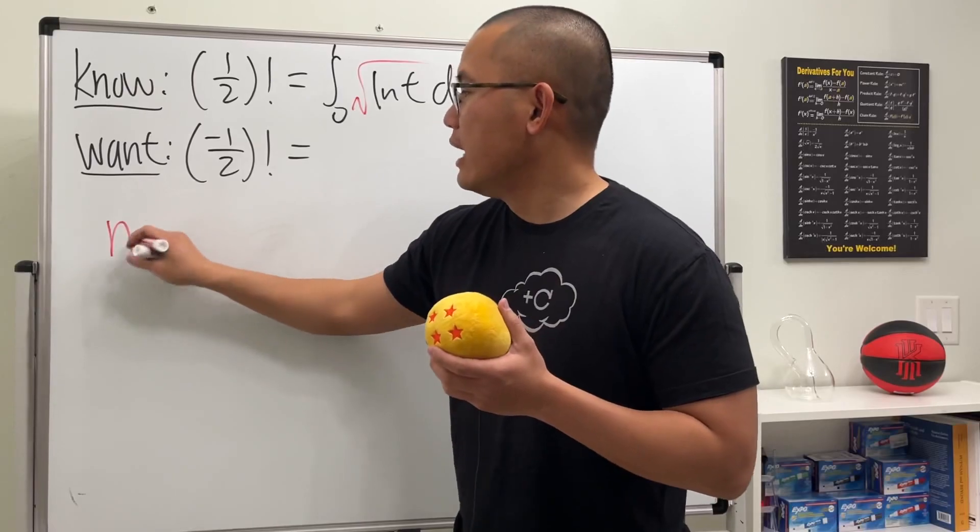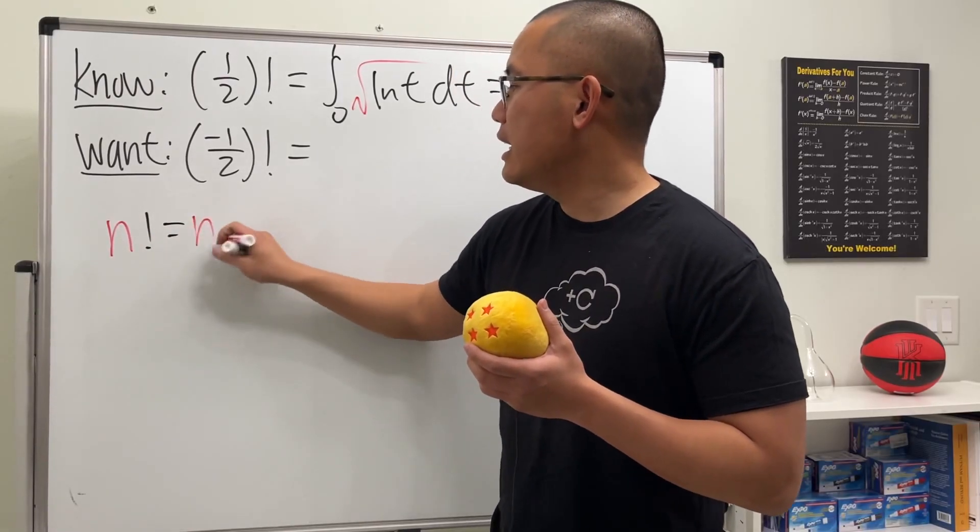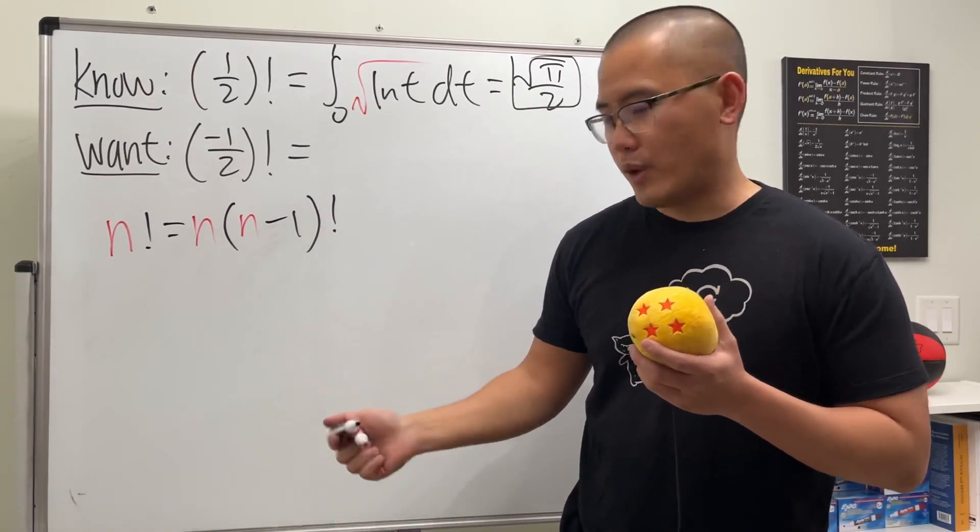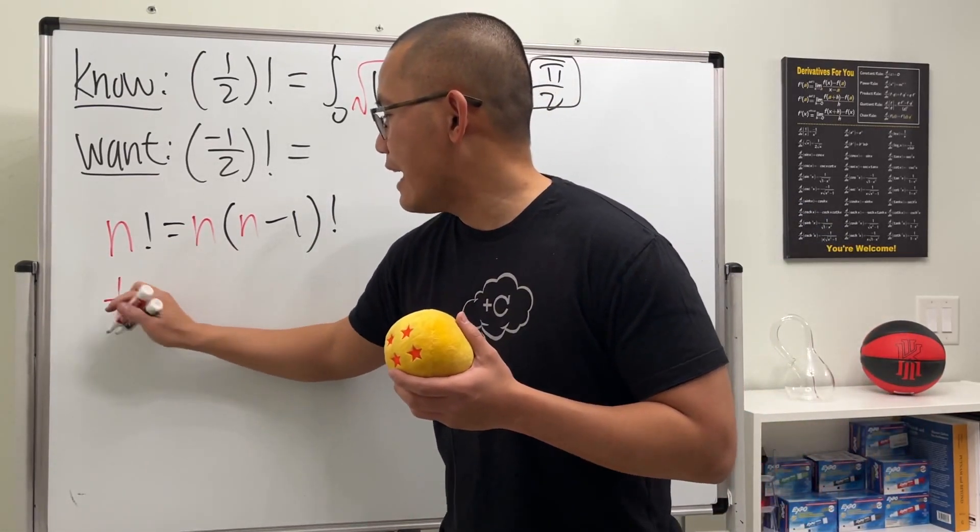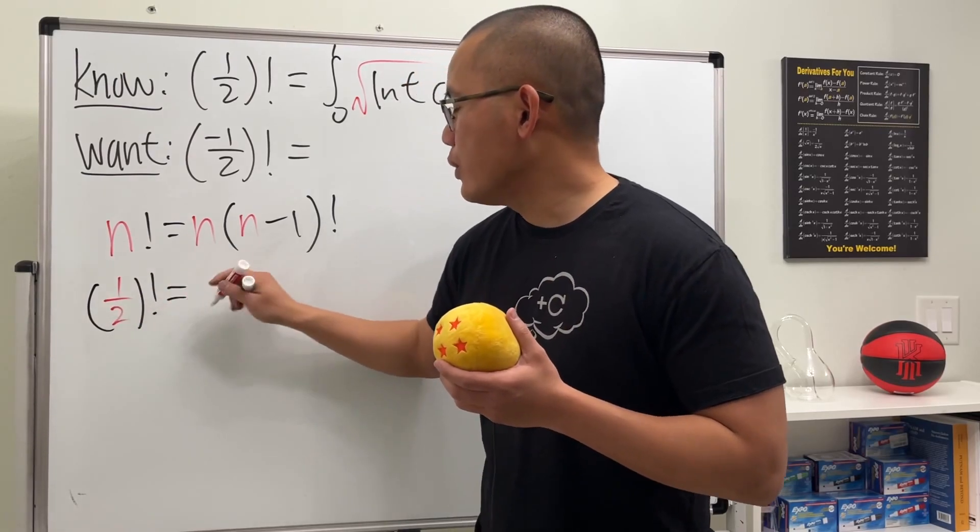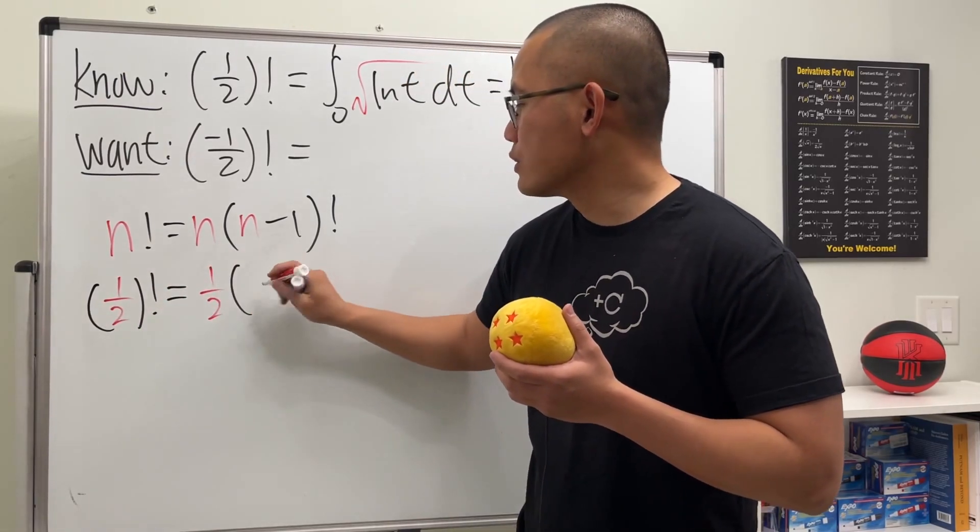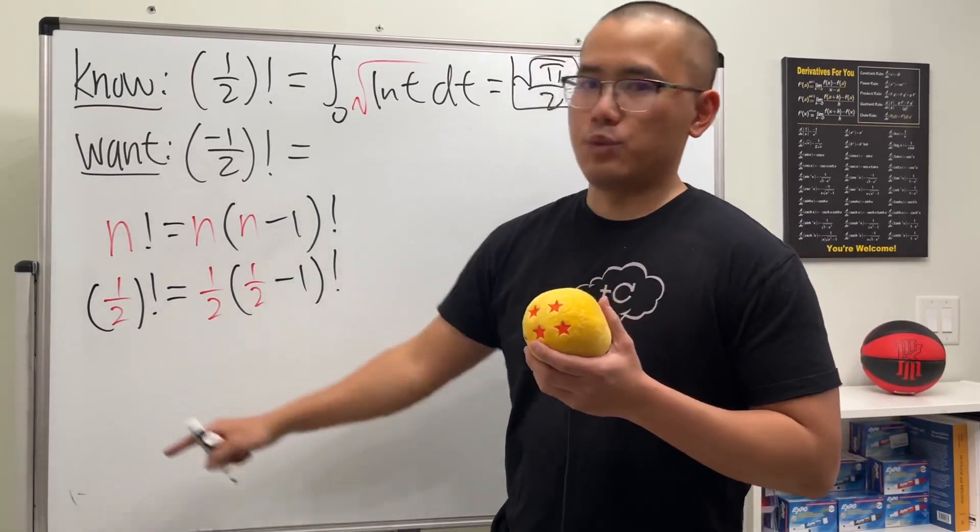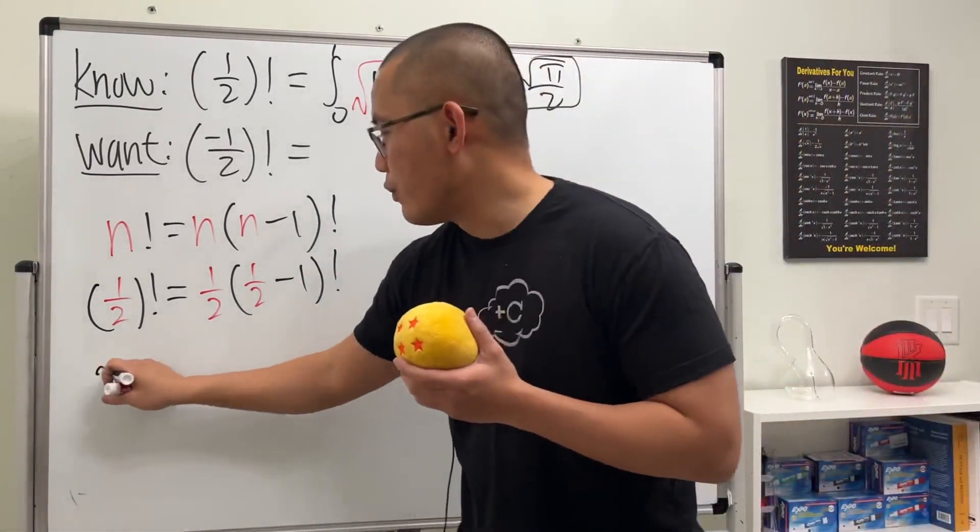Because we know that n factorial is the same as n times n minus 1 factorial, and we can just plug in n is equal to 1 half. So we will just get 1 half factorial right here, and that's equal to 1 half right here. And of course, we have 1 half minus 1, and then factorial that. Well, what's this? Well, I told you guys already, square root of pi over 2.